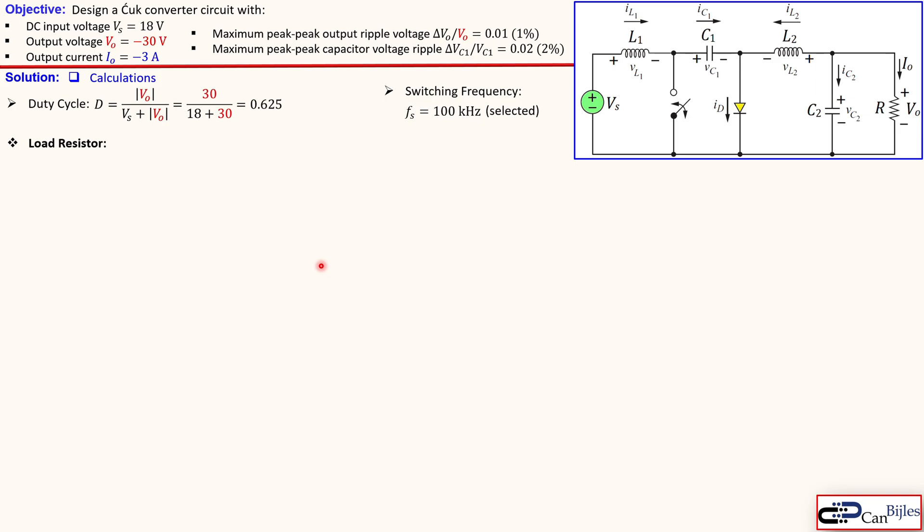Now the next step is the load resistor. Since we know that our output voltage is minus 30 volts and output current is minus 3 amps, we know from Ohm's law that we need a minimum resistor for our load of 10 ohms. So you just use Ohm's law here. So if you place here a lower resistor, so you require more current, then the design will be not met. So we need to then stay above this value, so 10 or larger.